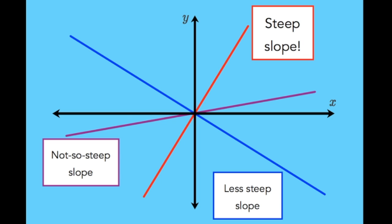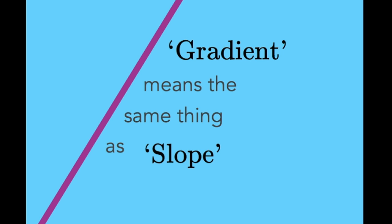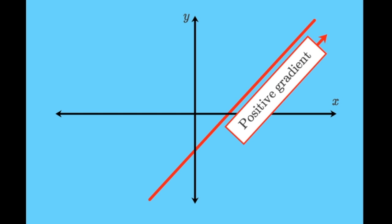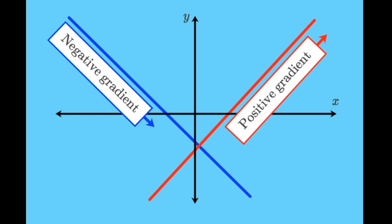Well, they all have different slopes. The red line is quite a bit steeper than the other two. Gradient is basically a fancy term for slope. What's special about gradient is that you can assign a number to it. If that gradient is a positive number, it means the line you're looking at slopes up to the right, like this. If it's a negative number, the line slopes down, like this.